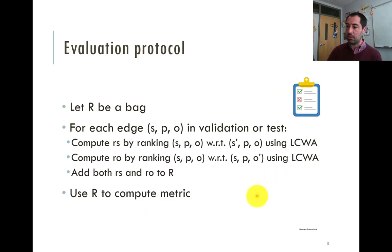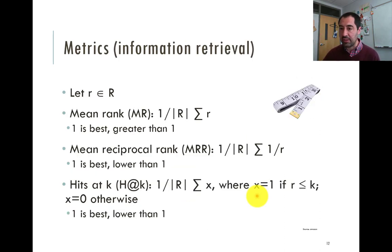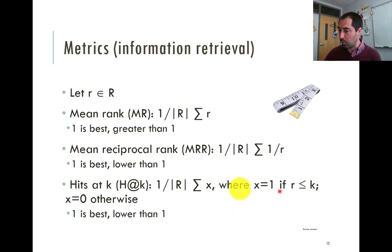The evaluation protocol takes all these ranks, computing them for all positive triples when both the subject and object — left and right nodes — are changed. We then use this set of ranks to compute metrics. The typical ones are mean rank, which is the average of all ranks; mean reciprocal rank, which is the average of one divided by the rank; and Hits@k, usually k equals 10 — if the rank is among the first 10 it's a hit, otherwise a miss.